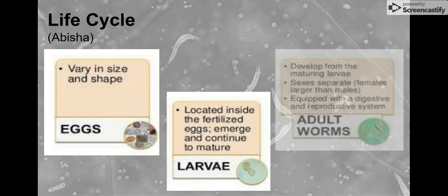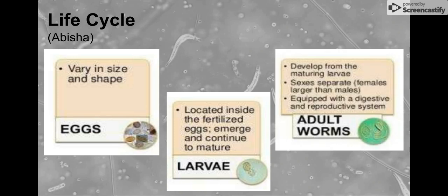This larva can emerge from the egg to continue to mature, finally being developed into an adult worm. At this stage, it may develop different sexes or be a hermaphrodite.